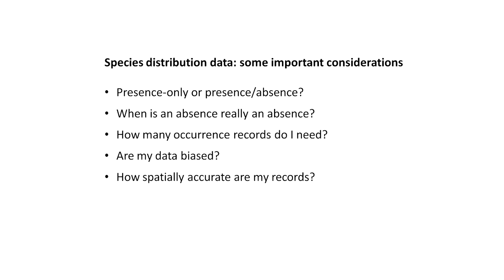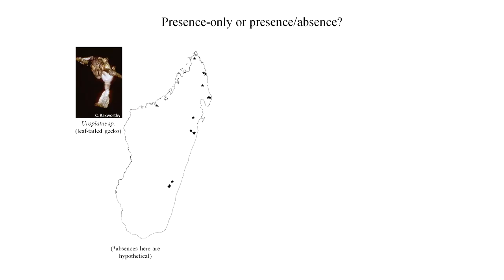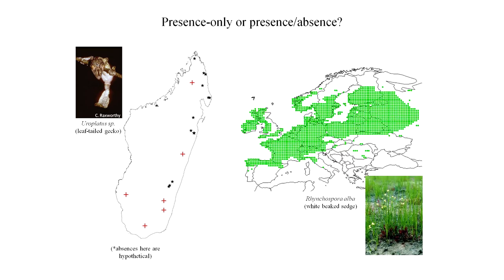What do we mean by presence-only versus presence-absence data? Presence-only data is typical for work in Madagascar where we have very few occurrence records collected from museum collections — there's no specimen saying 'I wasn't found here,' it's just presence-only data. We could hypothetically visit areas and say we didn't find the species there — that would be absence data, physically going, looking, and not finding the species. The white-beaked sedge plotted across Europe is another example of a data set showing a nice grid pattern — these are data from the Atlas Flora Europaea.